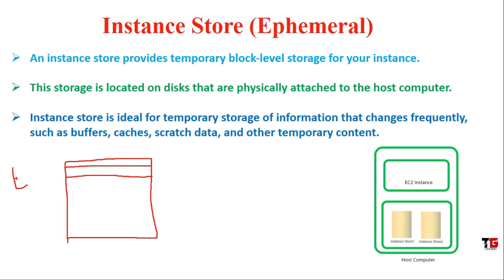The name for persistent storage is called Elastic Block Storage. You can protect this hard drive. When you want to terminate your instance, this is your root volume — this is your EBS. This is your persistent storage, meaning it will save your data.